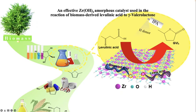Regarding levulinic acid to gamma-valerolactone: levulinic acid has received a lot of attention over the years as a raw material that can be converted into valuable chemicals. There have been some reports on the use of multi-phase catalysts to prepare levulinic acid, such as the conversion of glucose to levulinic acid on acidic zeolite and the hydrolysis of cellulose to glucose and levulinic acid using solid-supported acid catalysts. More recent attention has shifted to obtaining gamma-valerolactone from levulinic acid by hydrogenation, due to the unique physical and chemical properties of GVL, which is widely used as a green solvent and chemical intermediate.